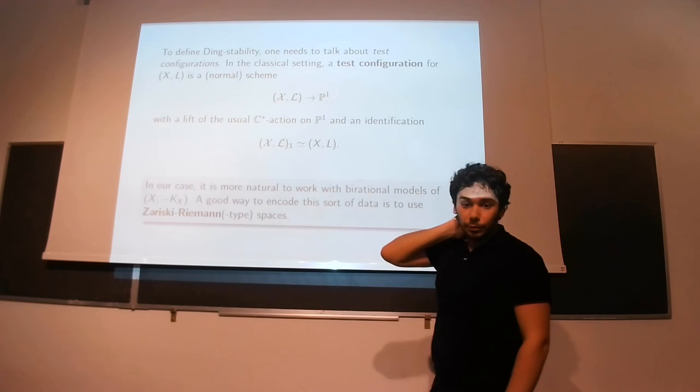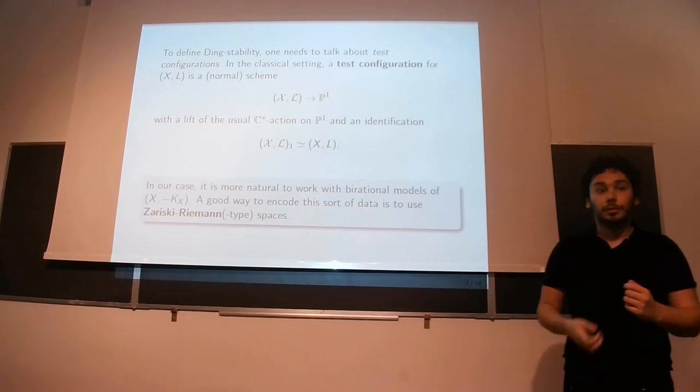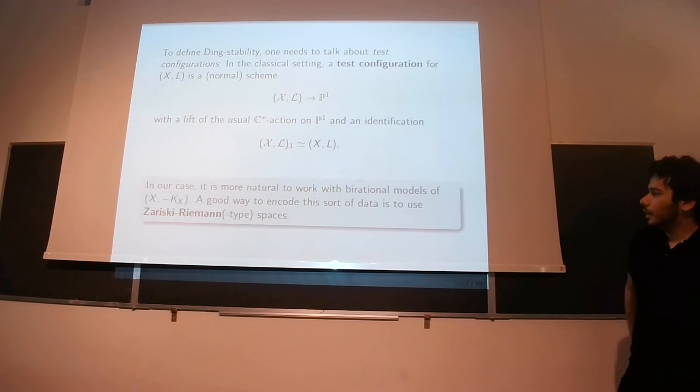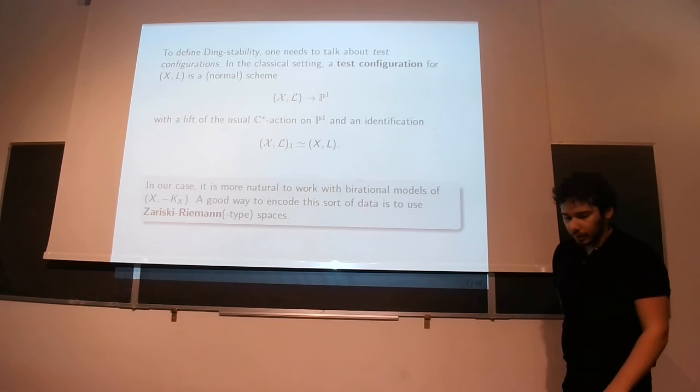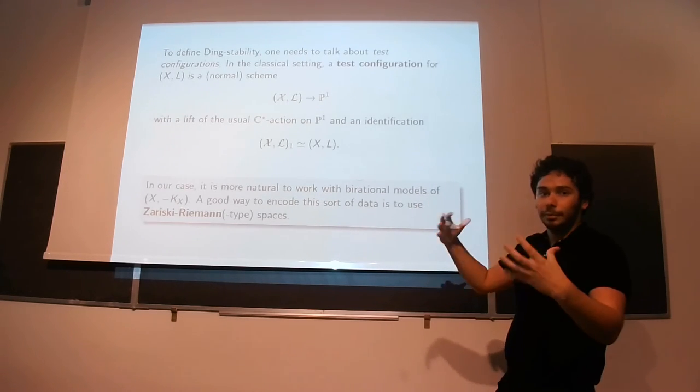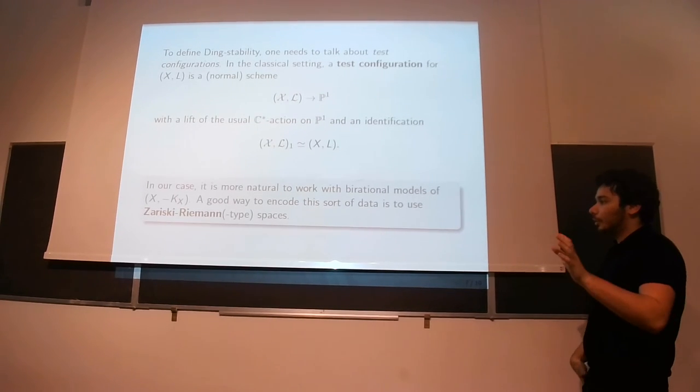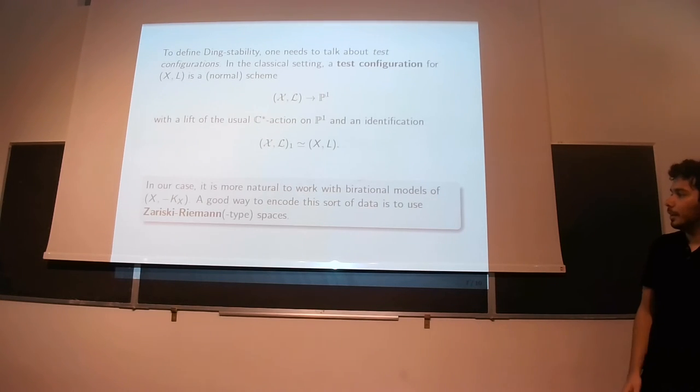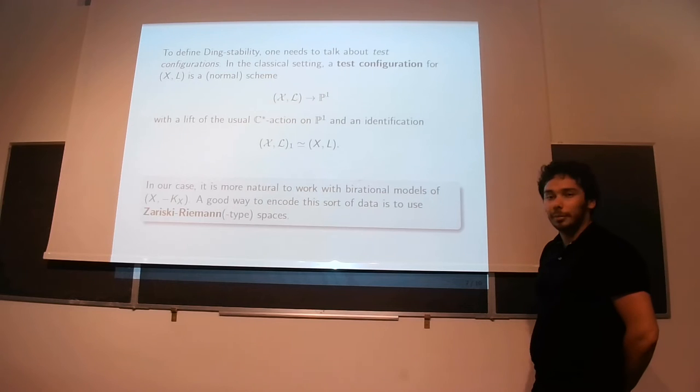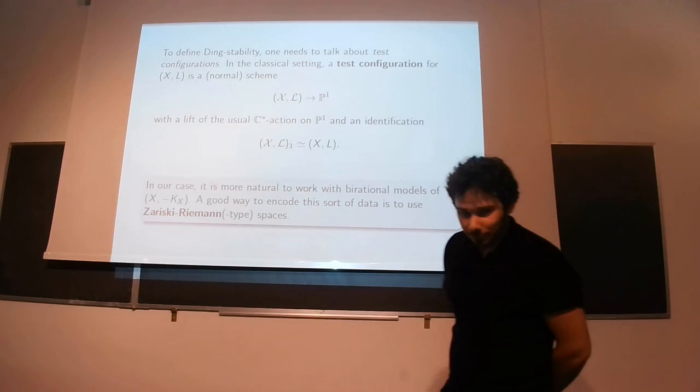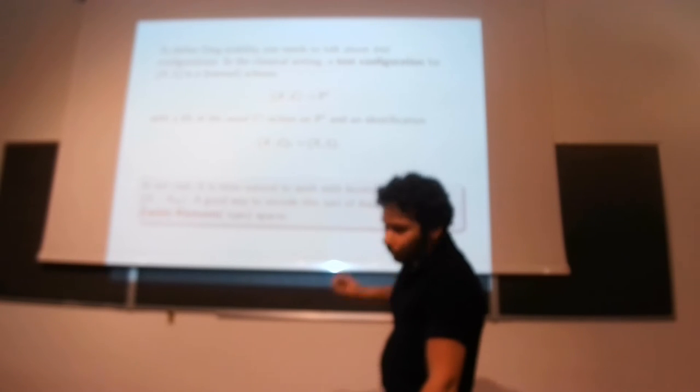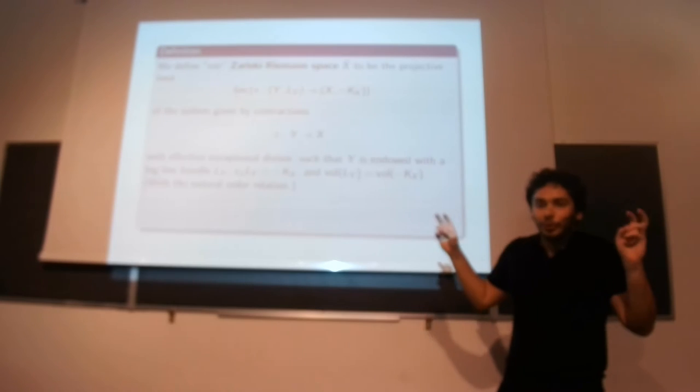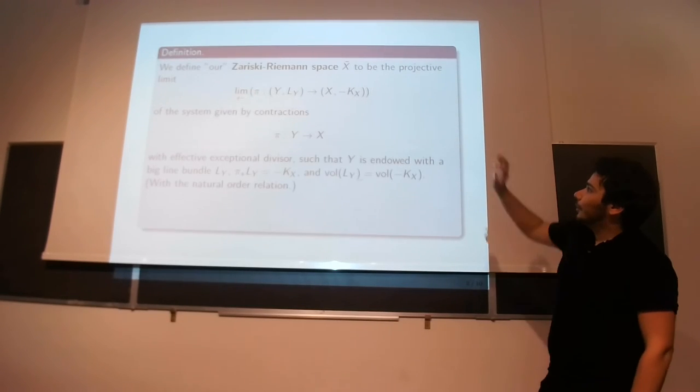But so, when we work with big line bundles, it's really a bit more natural to work birationally, and there are some natural constructions, such as blowing up the base locus of minus KX, for example. So, it really is a good idea to try to work also with birational models of X. And the classical way to really encode all these data is to use Zariski-Riemann spaces, which are kind of projective limits over all birational models of X. So these things come up already in the work of Zariski. So they're in the Zariski-Samuel book. They're called the Riemann surfaces, which is terrible terminology.